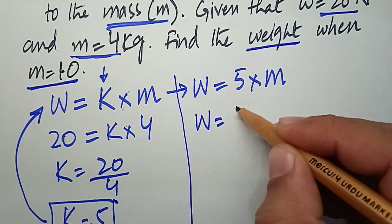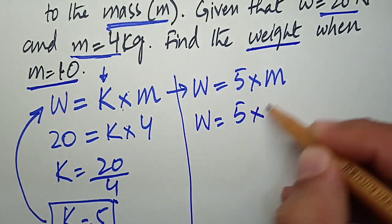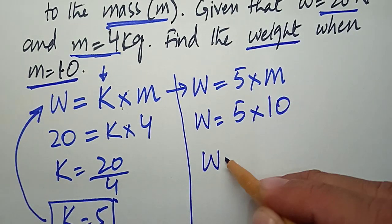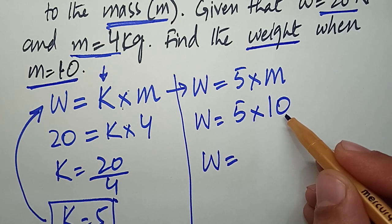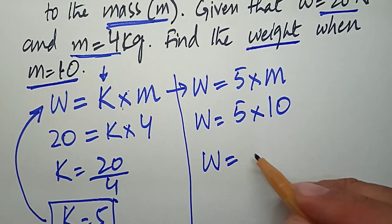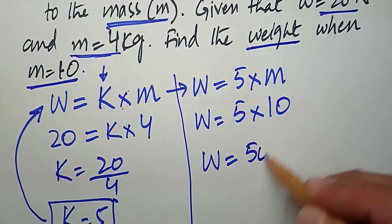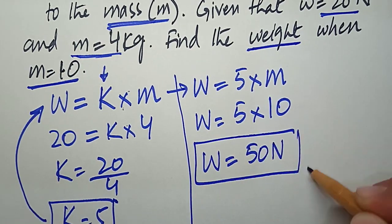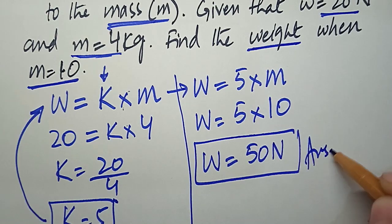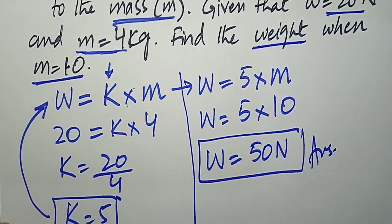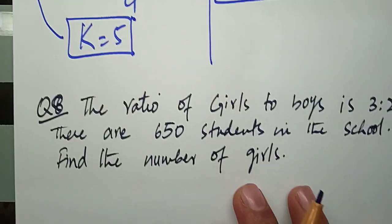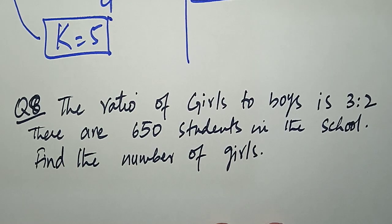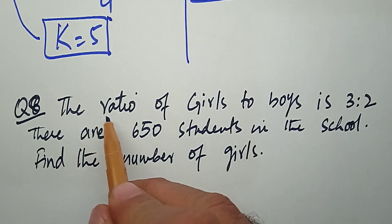To find the weight when mass is 10 kg: W equals 5 times 10, so the weight is 50 newtons. This is the answer to this question.